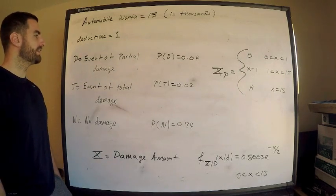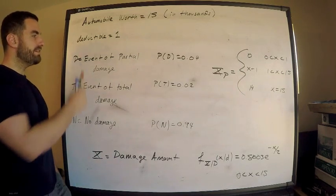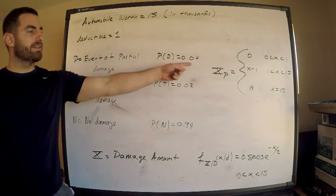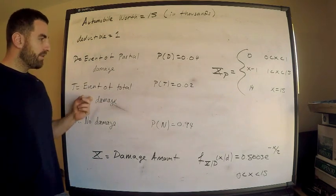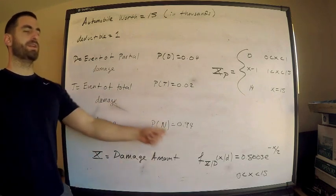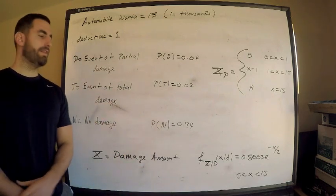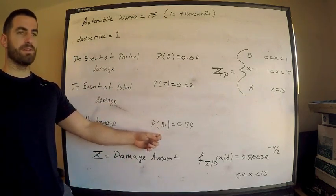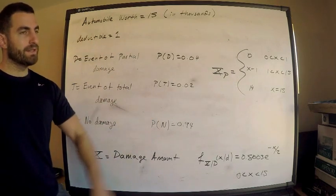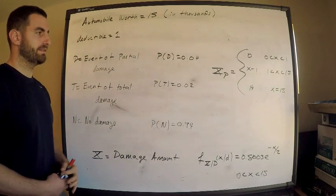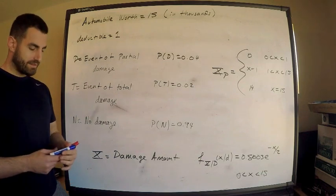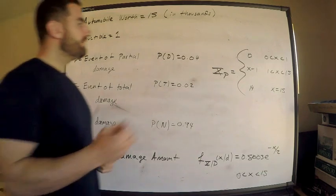They give me two probabilities. If D is the event of partial damage, the probability is 0.04. The probability of total damage is 0.02, which means the probability of no damage is 0.94. They don't give me that last one, but obviously those three situations are the only ones that can happen and they add up to one.